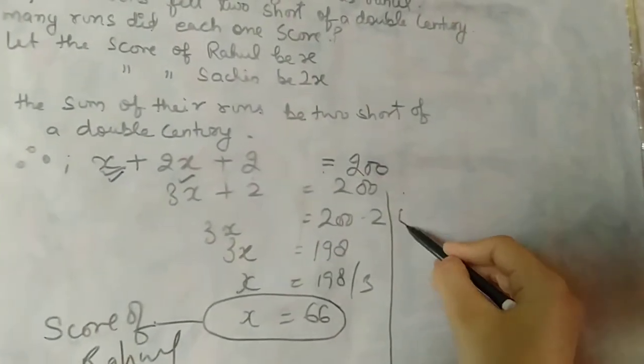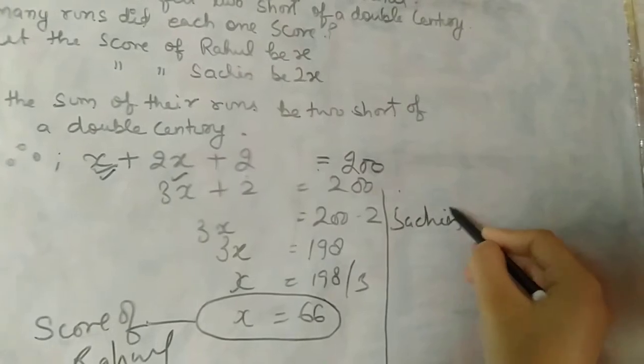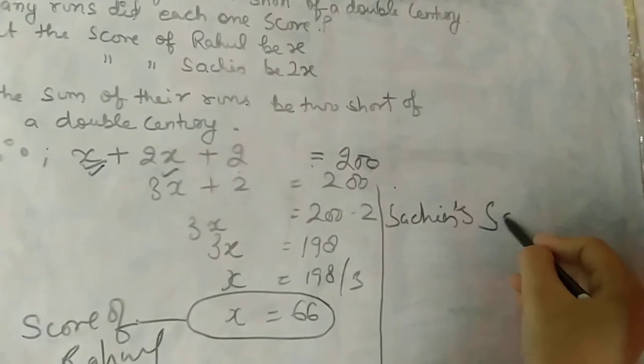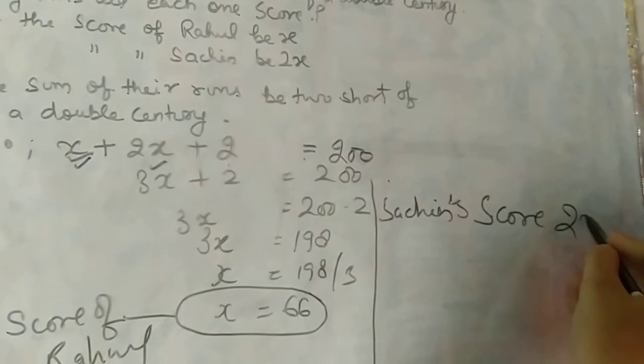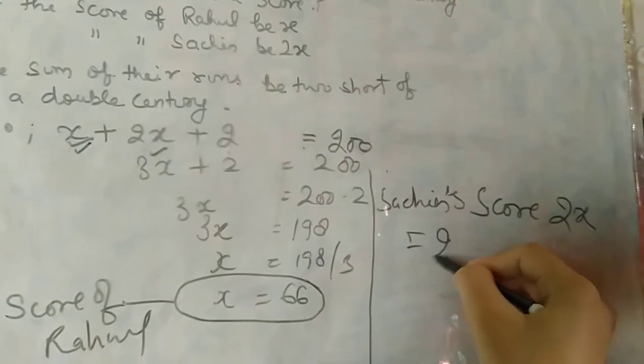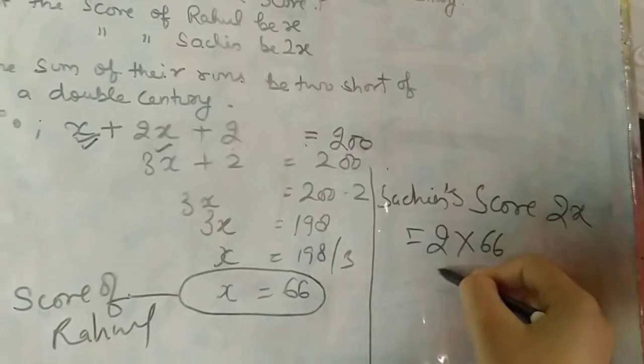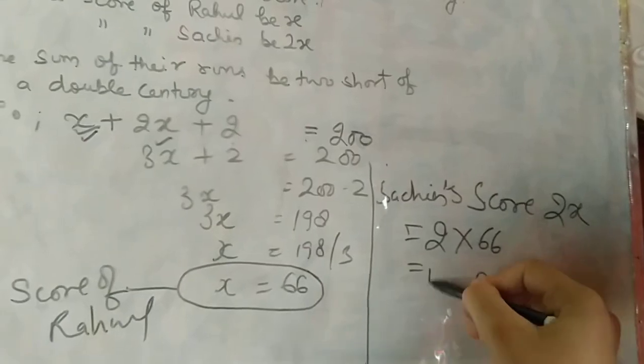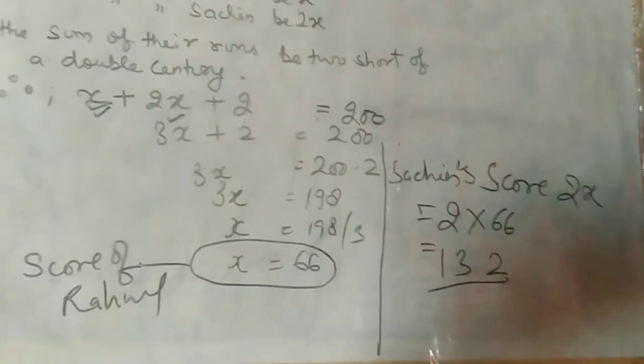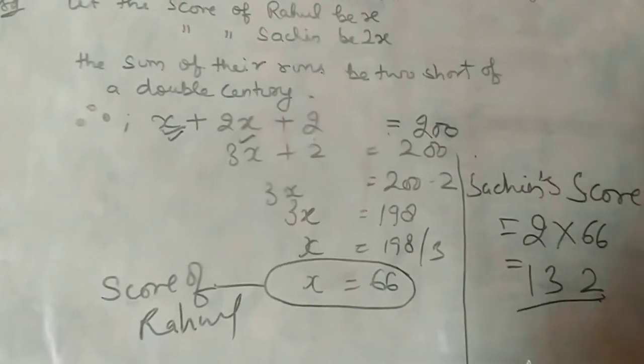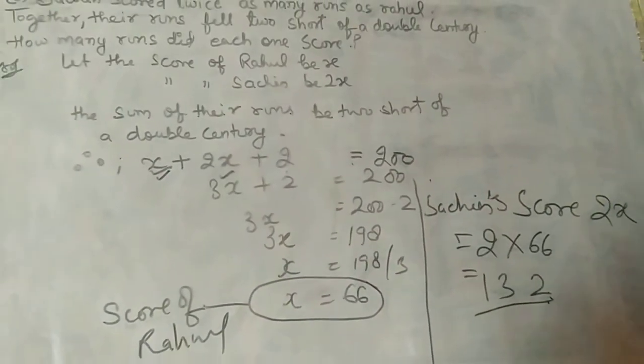Sachin's score was 2x, so that will be 2 multiplied by 66, which equals 132. That means Sachin scored 132 runs.